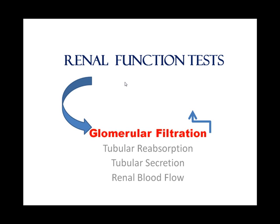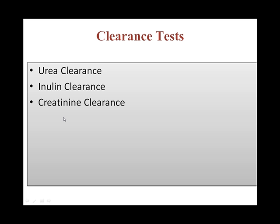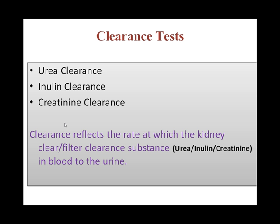The standard test used to measure the glomerular filtration rate is the clearance test. The familiar clearance tests in clinical chemistry are urea clearance, inulin clearance, and creatinine clearance. Each clearance is named by the name of the clearance substance: urea, inulin, and creatinine. We can also use radio isotopes as the clearance substance. As the name implies, the clearance test indicates at what rate the kidney filters the clearance substance from blood into urine through the glomerulus.